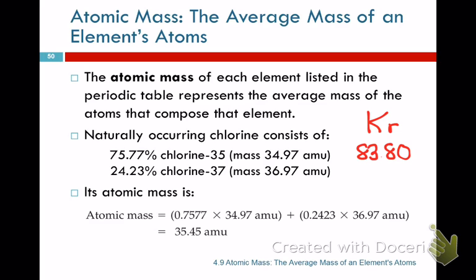Laid out systematically: 75.77% × 34.97 + 24.23% × 36.97. Add all that up and divide by 100. That's the average mass. Those are the only naturally occurring isotopes of chlorine. That's how you do the calculation.